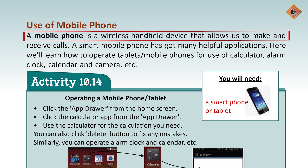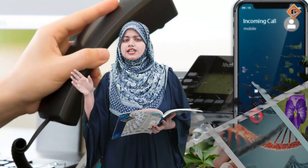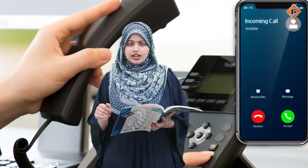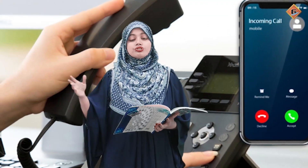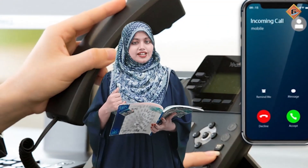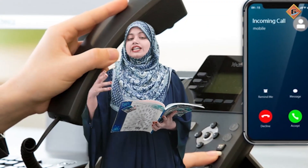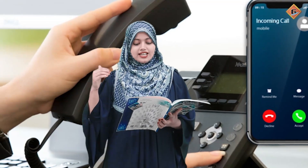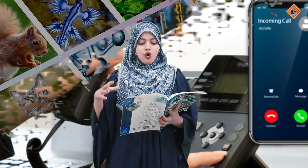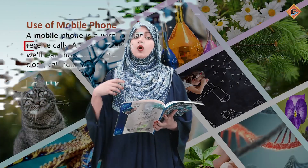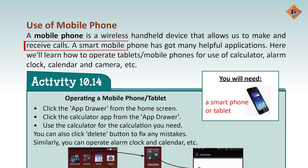Aur jahan pe bhi telephone pada hoga, wahan pe uski wires maujood hongi. Lekin hamara mobile phone itna easy to use hai ki hum isse ghar ke baahir bhi leke ja sakte hain. Kabhi aapne pehle zamaane mein dekha ki koi insaan apne saath telephone utha kar la raha ho? Nahi na, kyunki uske saath to wires laghi hoti thin. Lekin hamara mobile phone wireless hai aur isse hum calls kar sakte hain aur receive kar sakte hain.